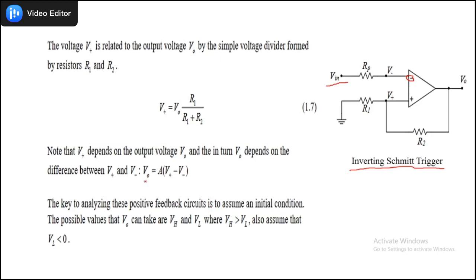The output for this circuit is calculated using the standard equation: V0 equals A times (V+ minus V−), where V+ is the voltage on the non-inverting terminal and V− is the voltage on the inverting terminal. Using the voltage divider equation, V+ in terms of V0 is: V+ = V0 × R1 / (R1 + R2). This tells us that the input has become a function of the output voltage, which was not the case earlier.